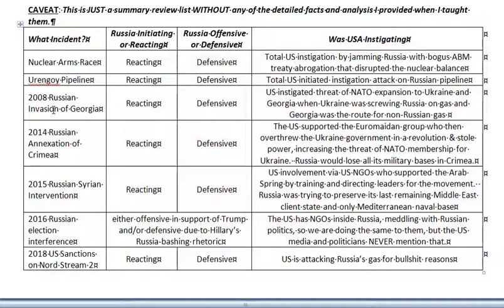2008 Russian invasion of Georgia: Russia was reacting, Russia was being defensive. The US initiated the threat of NATO expansion to Ukraine and Georgia at a time when Ukraine was screwing Russia on gas sales to Europe and Georgia was a route for non-Russian gas. There's no doubt the two were packaged together as a double threat to jam Russia.